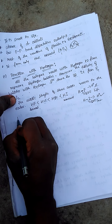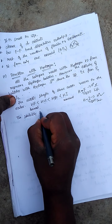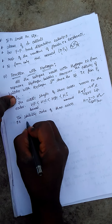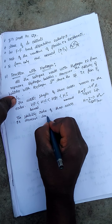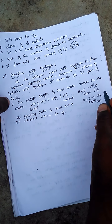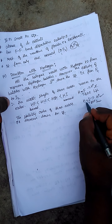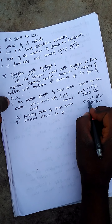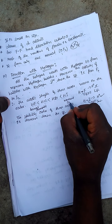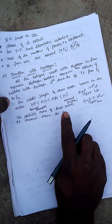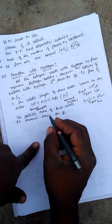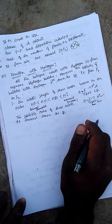The stability order of these acids decreases down the group — HF is more stable but less acidic, while HI is less stable but more acidic. This inverse relationship between stability and acidic nature is due to bond dissociation enthalpy, which is the main factor. This concludes the reaction with hydrogen.